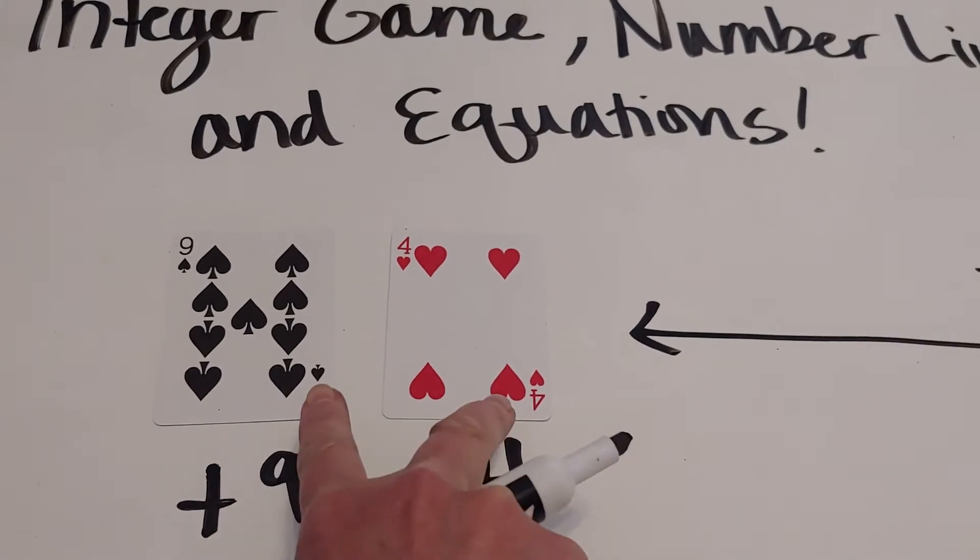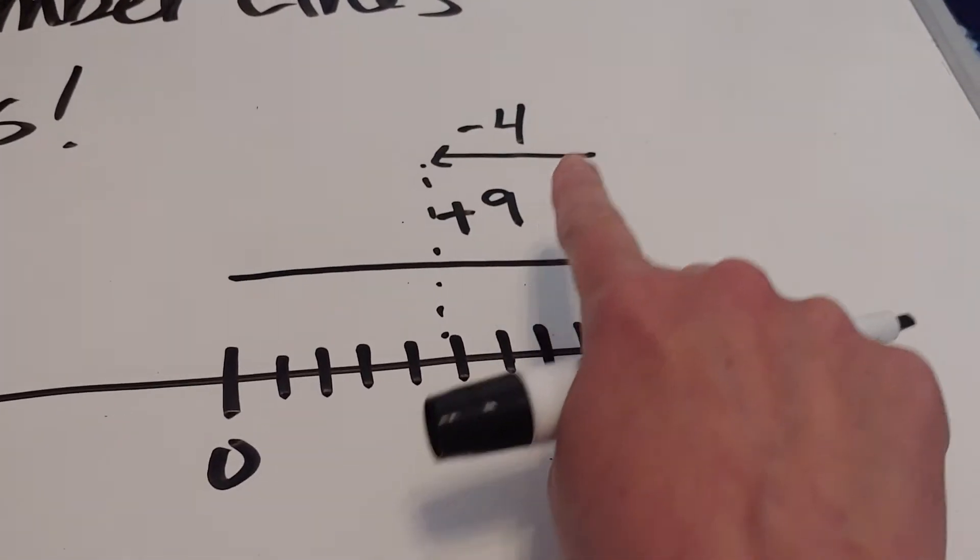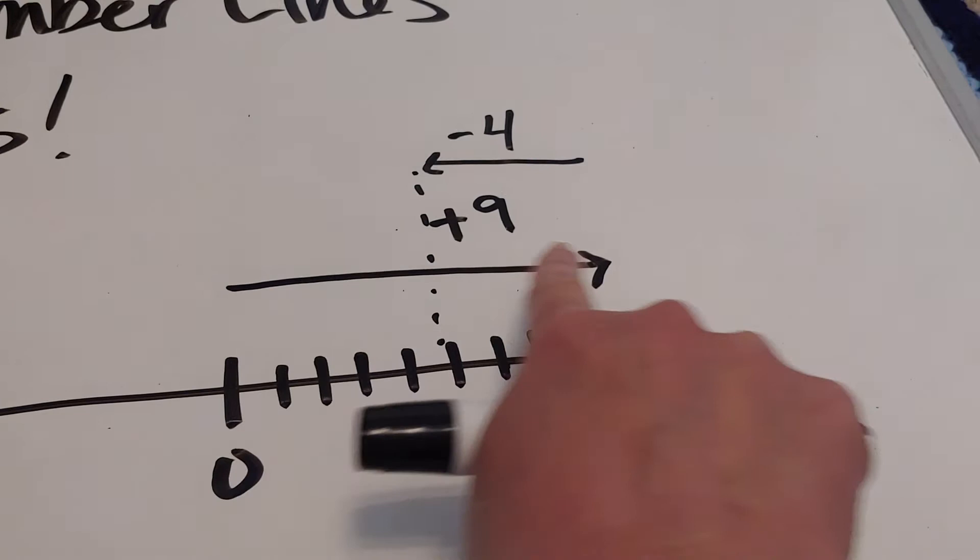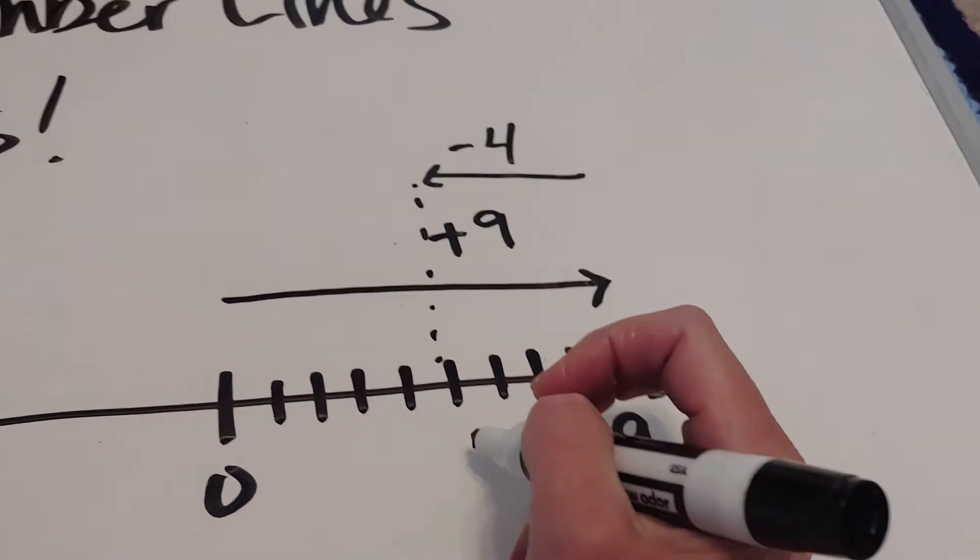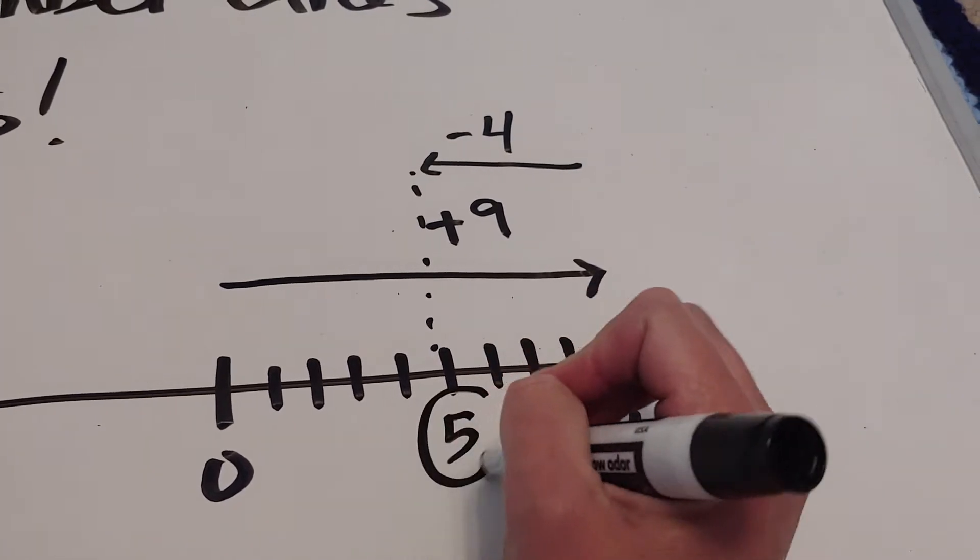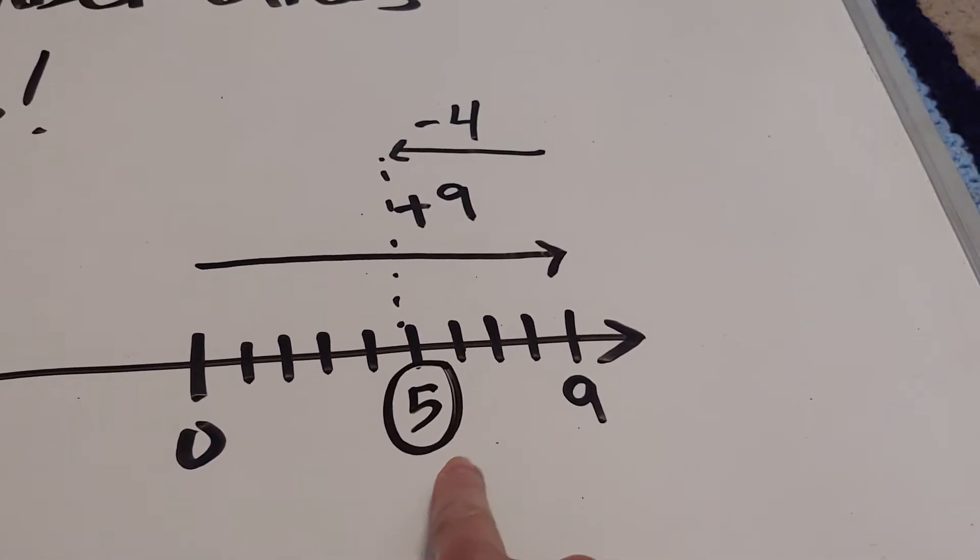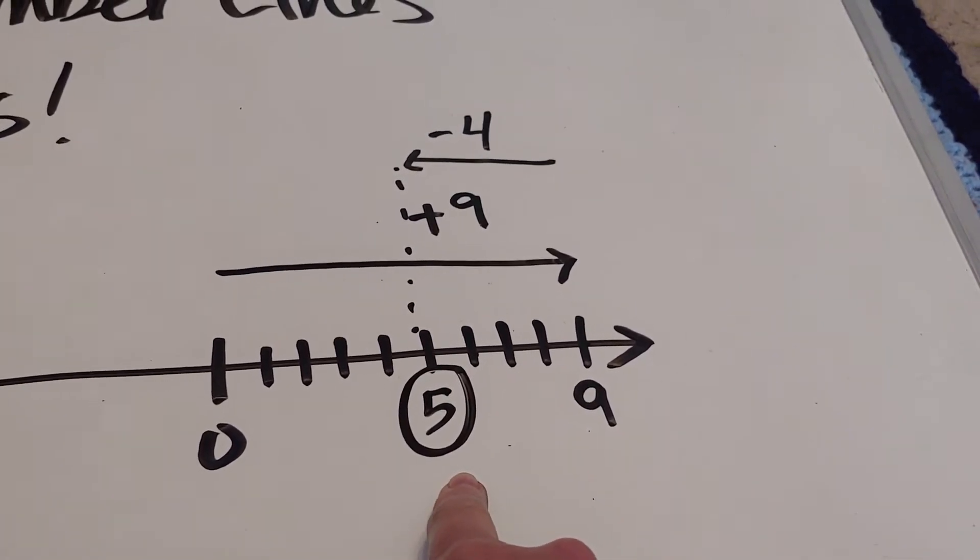So positive nine, negative four in cards looks like this. This whole arrow is nine, this whole arrow is negative four, and where it ends up is the final answer of five, our net result.